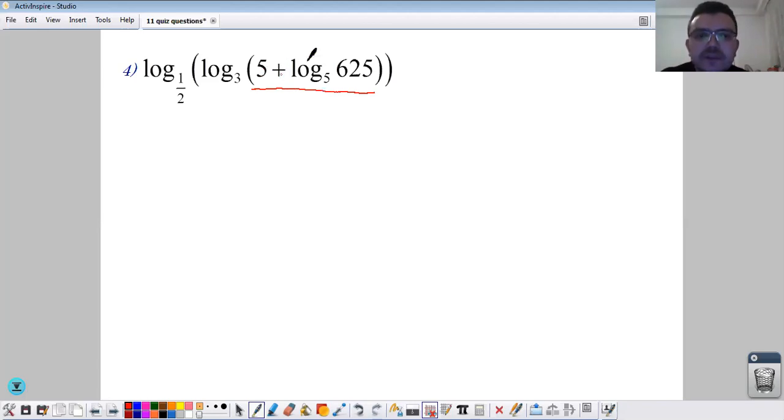Inside here we have 5 plus log base 5 of 625. We're checking which power of 5 makes 625, which is the fourth power.